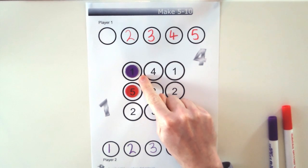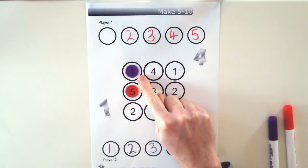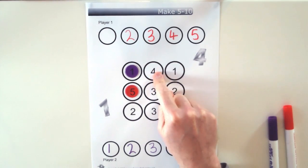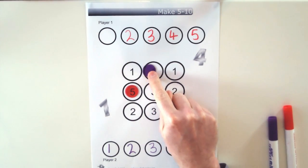But luckily purple has thought ahead and they've put themselves into a position where the last number they need, the 4, is right there for them to move onto. So they move there.